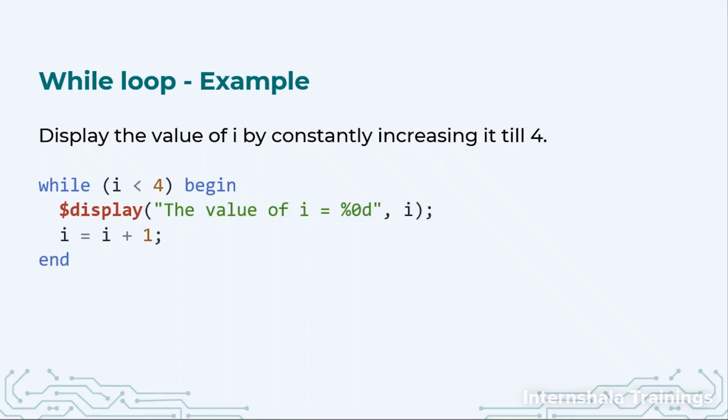Again, 3 is less than 4. 3 will be displayed and then 3 will become 4. And then when we compare 4 with 4, 4 is not less than 4. It will not come in the loop, so we will stop there. So that is how the while loop works.